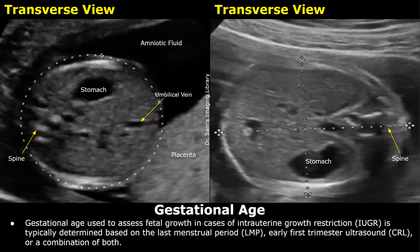The gestational age is determined by the last menstrual period, the LMP, and early first trimester ultrasound through crown rump length measurement, the CRL. The CRL is very accurate in determining the gestational age, and this gestational age is then used later on in pregnancy.